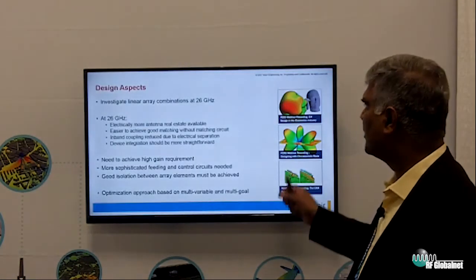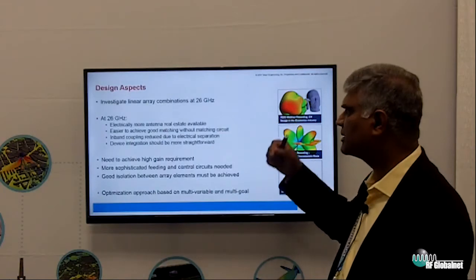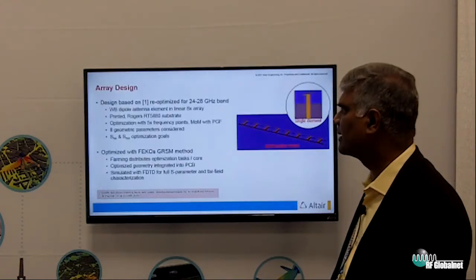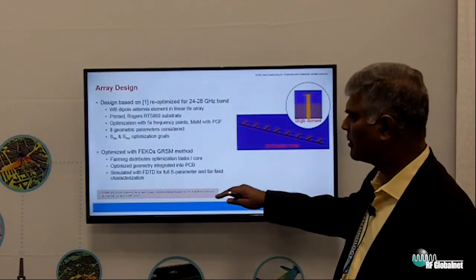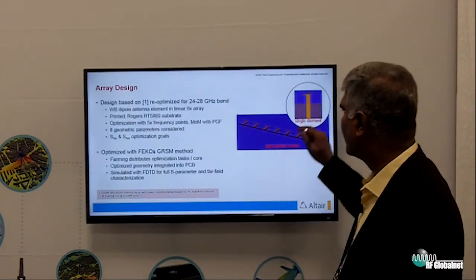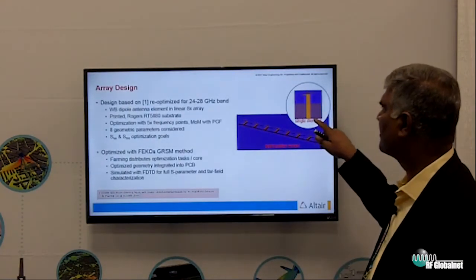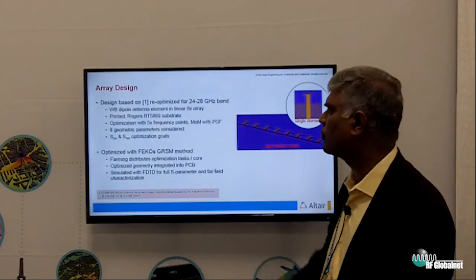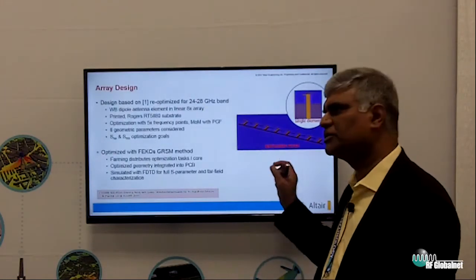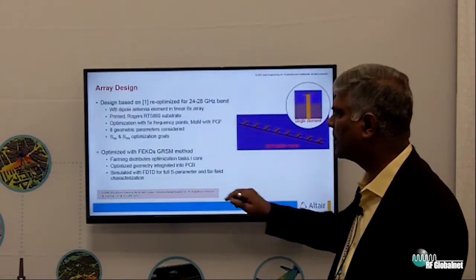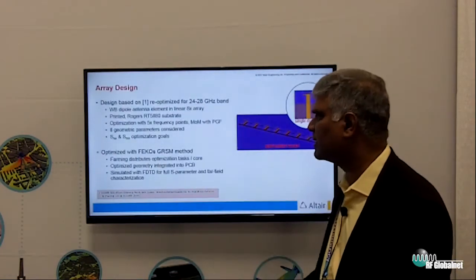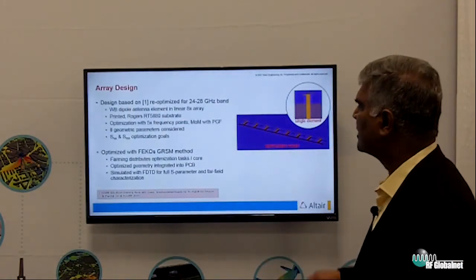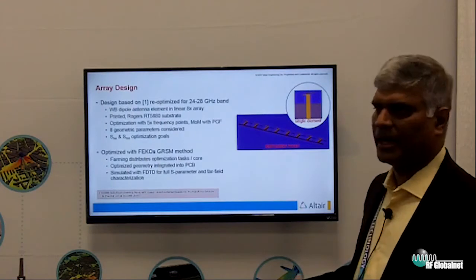Let's look at the device. We took a 26 GHz frequency to design the device antenna here. We took from the literature an antenna design that looks like a printed dipole type of design, wideband from 24 to 28 GHz. We used the design to optimize using the optimizer called GSRM, generalized response surface method in FEKO, to optimize it so we can create the array out of it.